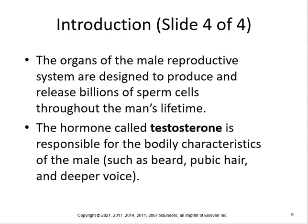The organs of the male reproductive system are designed to produce and release billions of sperm cells throughout a man's lifetime — men can reproduce until they die. Women have a finite number of eggs; after menopause, no more eggs are released. The hormone testosterone is responsible for male bodily characteristics such as a beard, deeper voice, and pubic hair.